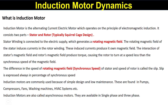What is an induction motor? An induction motor is an alternating current electric motor which operates on the principle of electromagnetic induction. It consists of two parts: stator and rotor. The rotor is generally a squirrel cage design. The stator winding is connected to the electrical supply, which generates a rotating magnetic field. This rotating magnetic field induces currents in the rotor winding, which produces its own magnetic field. The interaction of the stator and rotor magnetic fields produces torque, causing the rotor to turn.